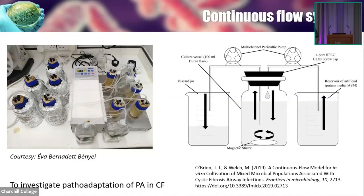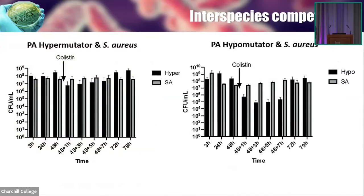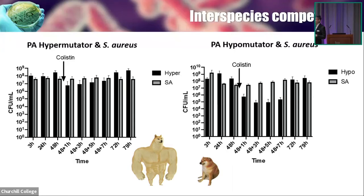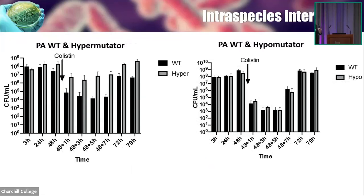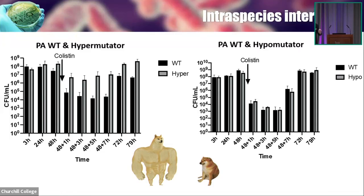Based on the results, when we grow the hypermutator with the CF oral bacteria together, the hypermutator is quite strong even after we add colistin to kill the Pseudomonas aeruginosa. But if it is the hypomutator, it is quite weak — when we add colistin, it drops. As for intraspecies competition, when we grow the wild type together with the hyper or hypomutator, before colistin addition they grow almost equally, almost balanced. But the hypermutator is still quite strong after colistin addition, while the hypomutator is as weak as the wild type. Which means this system is quite successful, and we can try to use this, for example, in drug discovery.